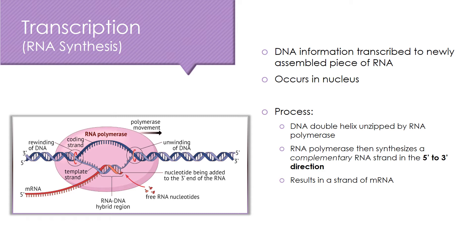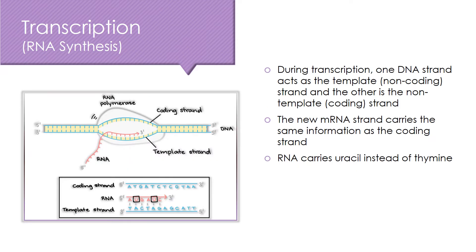RNA polymerase also synthesizes the new complementary RNA strand by reading the DNA template strand. This new RNA strand is built in the 5' to 3' direction, and the result is a strand of messenger RNA. During this process, the template strand of DNA is the non-coding strand, and the non-template strand is the coding strand. The new strand of mRNA carries the same information as the coding strand of DNA, except that it contains uracil instead of thymine.